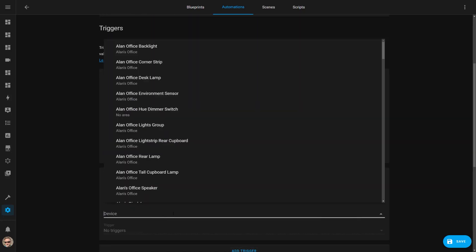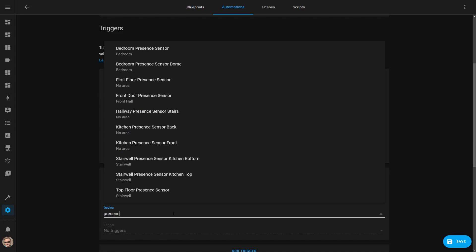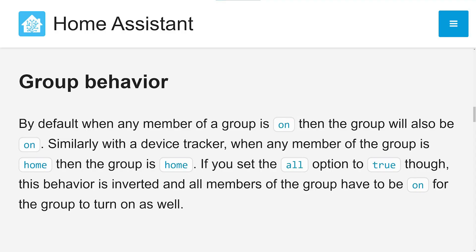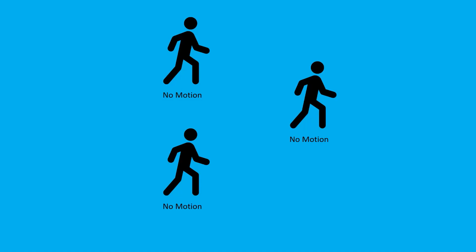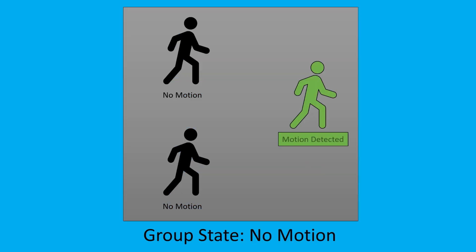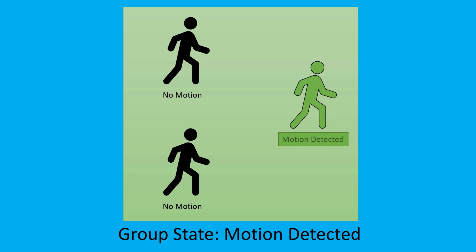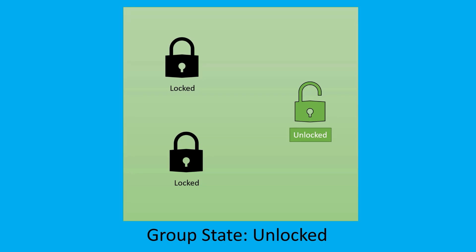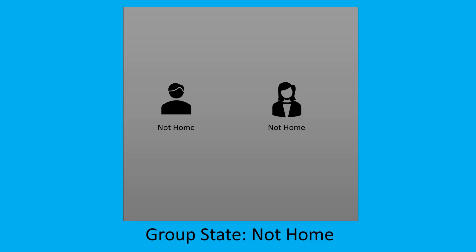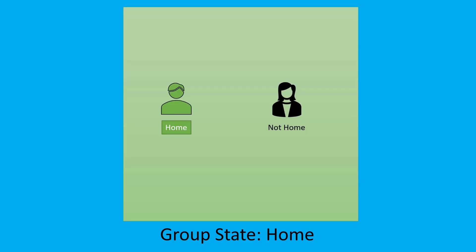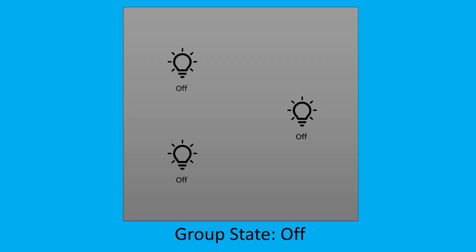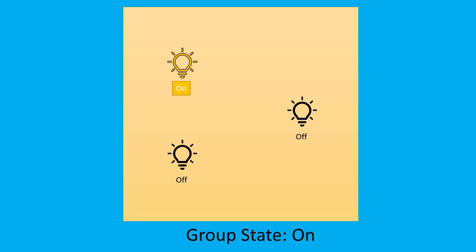That is definitely an option and would work perfectly fine. Or you could add all these motion sensor entities to a single group called all motion sensors. The group will inherit the state of the entity that is non-standard. For example, if you have three motion sensors in your group and one of them detects motion, then the whole group is set to that detected state. If you have a group of smart locks and any of the locks is unlocked, then the whole group will be set to unlocked. If you have a group of people or device trackers and one of those people is home, then the whole group is set to home. If you have a group of lights and any of these lights is switched on, the whole group is switched on.